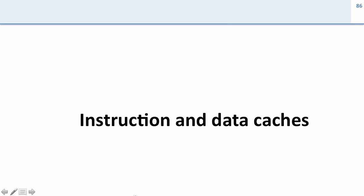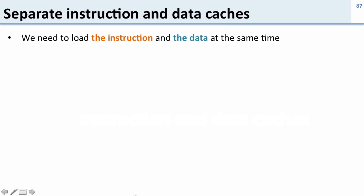So now we're going to talk about two different types of caches: instruction caches and data caches. The reason we have separate instruction and data caches is we need to load the instruction and the data at the same time.